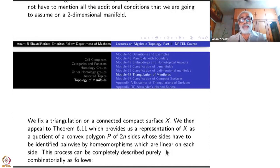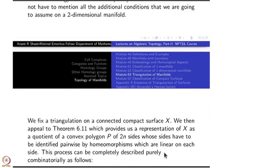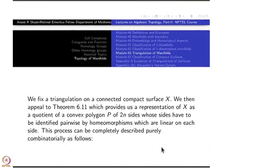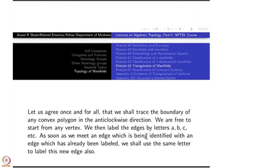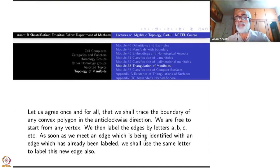The boundary edges are paired up and then the identification is taken by homeomorphism from one of them to another one in the pair by a linear homeomorphism. And we identify that. The quotient space is precisely our K with a triangulation, appropriate triangulation. So this process can be completely described now purely combinatorially, as if you don't have any topology there at all.